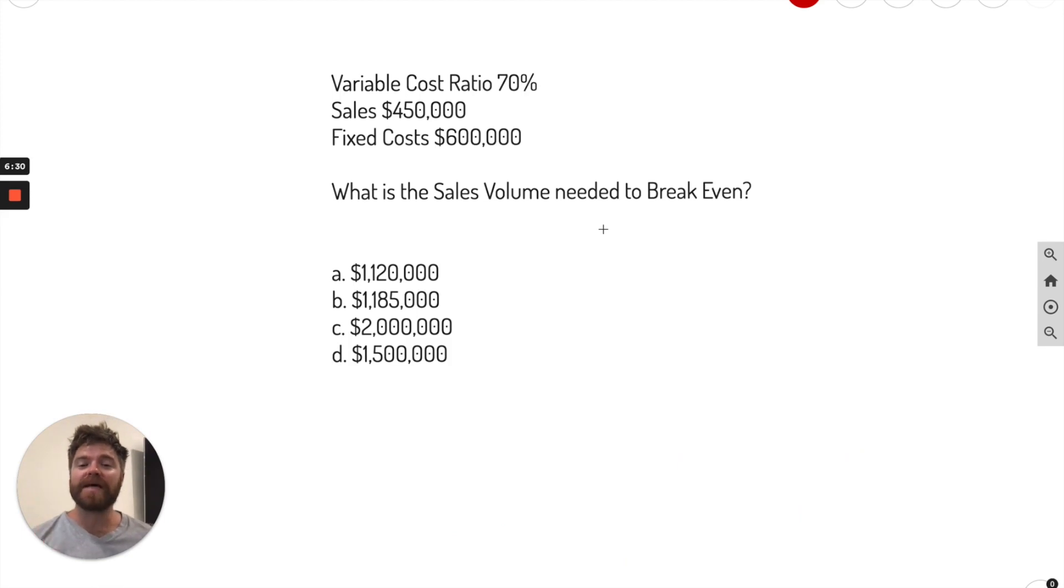Okay, next problem here. So this is asking what is the sales volume needed to break even. When they mean volume, they're looking for dollars, how much revenue must be sold to break even. So to figure this out, we have to do a formula, and that's going to be your fixed costs divided by contribution margin percentage. Contribution margin percentage, and this is actually its own formula.